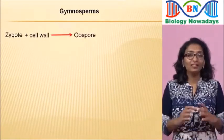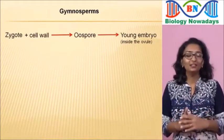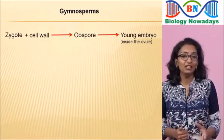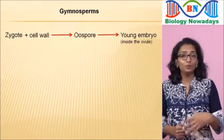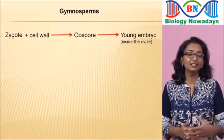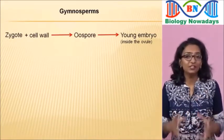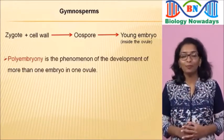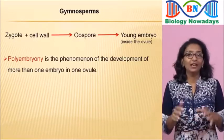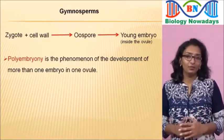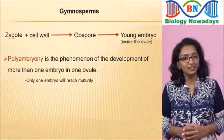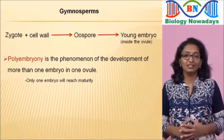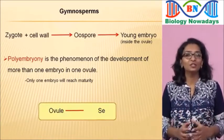The oospore then develops into a young embryo inside the ovule. Since a single Cycas ovule contains 2–8 archegonia, 2–8 embryos will also develop inside a single ovule. The phenomenon of development of more than one embryo inside a single ovule is known as polyembryony. Among the 2–8 embryos, only one embryo will reach maturity and others degenerate.